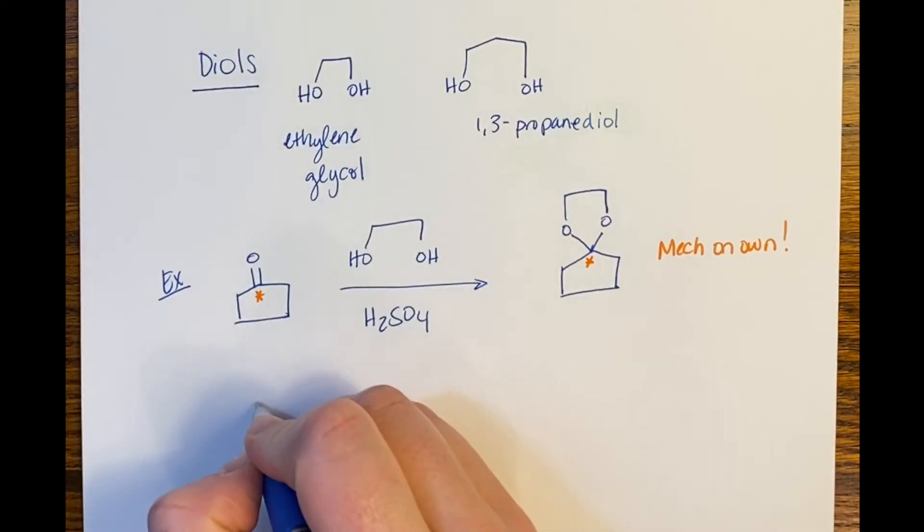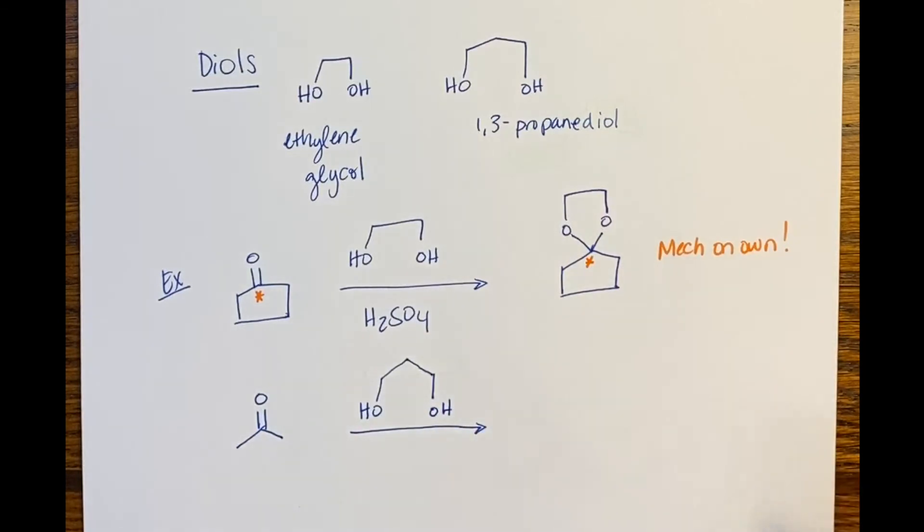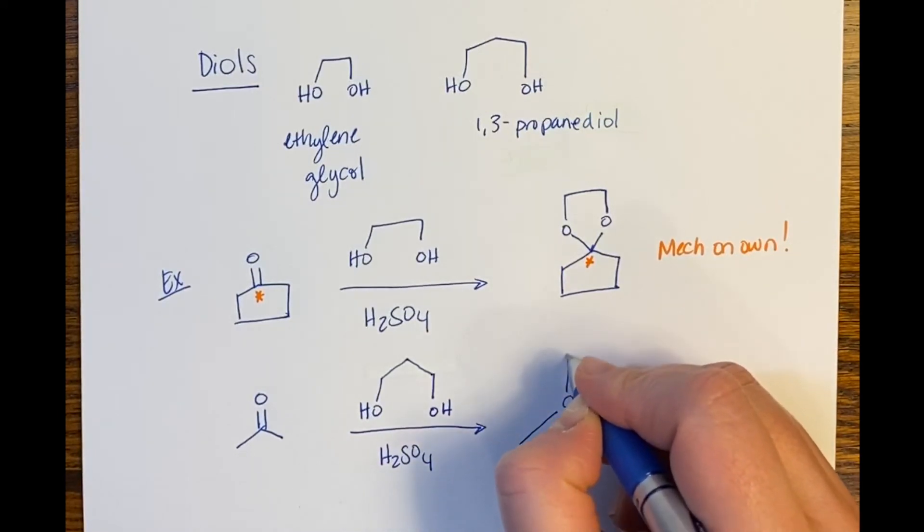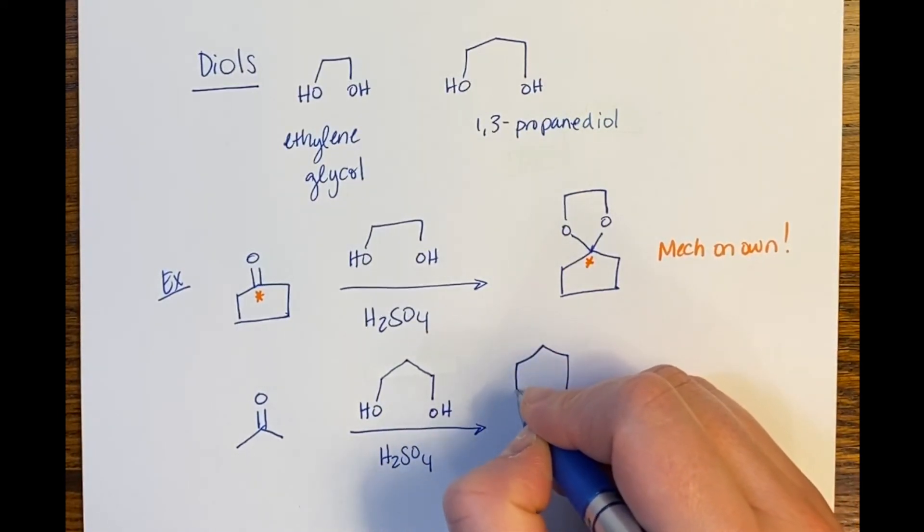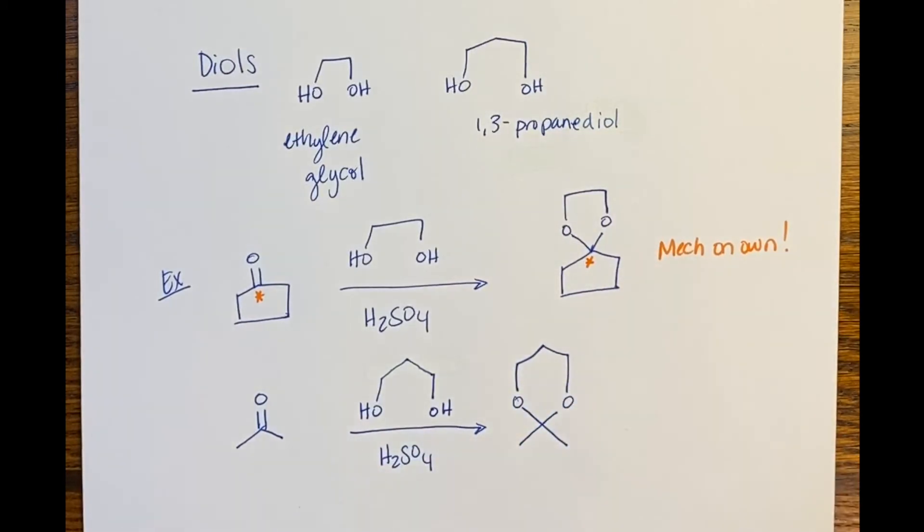Similarly, if I had a molecule of acetone, if I treated this molecule of acetone with 1,3-propanediol in the presence of sulfuric acid, the product that I would make out of this reaction looks like this. Where this carbon right here is the carbon of my carbonyl. And in my product, it's this carbon right here that is the carbon of my ketone.